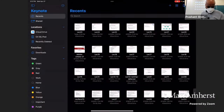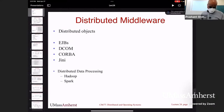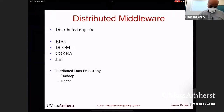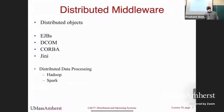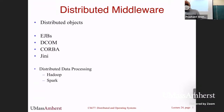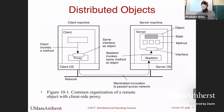Let's switch to today's lecture, which is on distributed middleware. We have quite a few different middlewares to look at. Towards the end, I'm going to go back to Hadoop and Spark, which is basically distributed data processing using things like HDFS. Let's start with EJBs — Enterprise Java Beans.